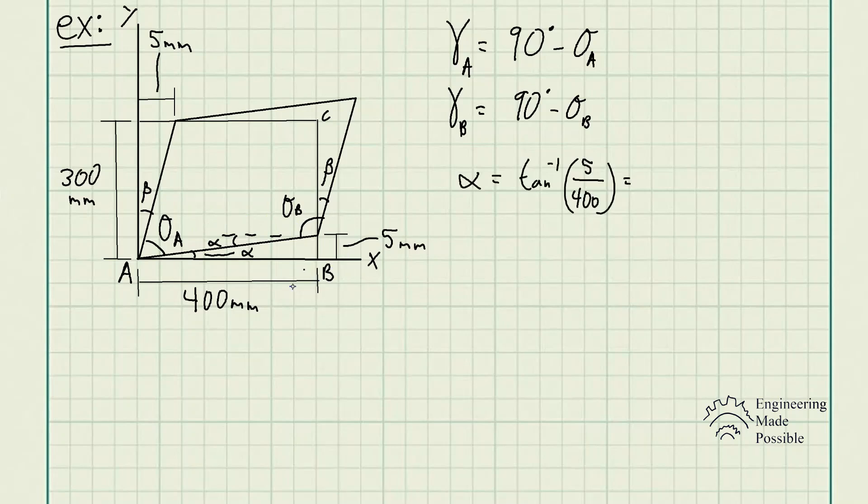So we see alpha, we could use tangent, which is opposite over adjacent. And the tangent inverse to find the angle alpha is tangent inverse 5 divided by 400, which gives us 0.7141 degrees.